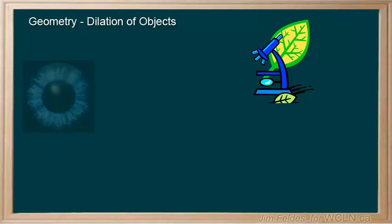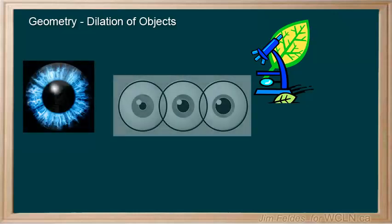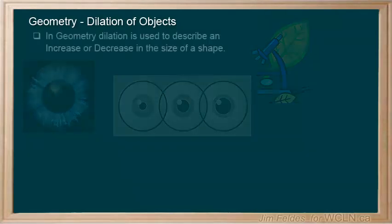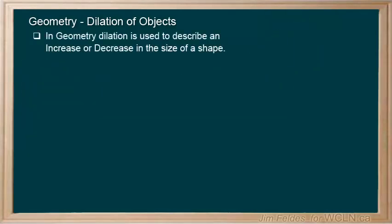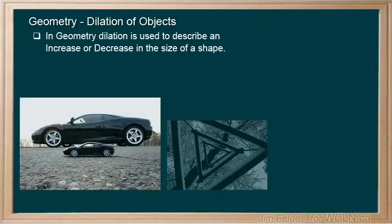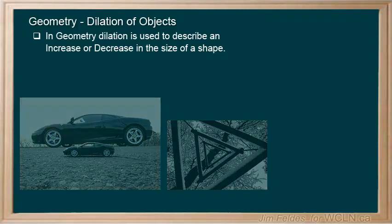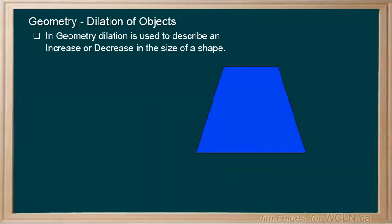For example, the pupil in our eye can dilate to allow more light in when we are in low light environments. In geometry, we use the word to describe how we can increase or decrease the size of a shape. So this type of transformation describes how an object expands or shrinks, but otherwise leaves it unchanged.